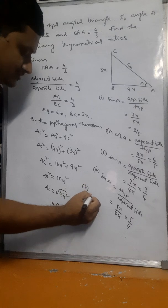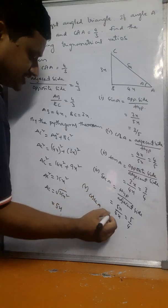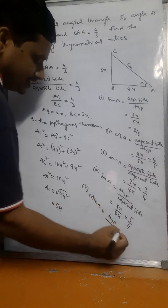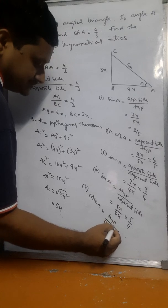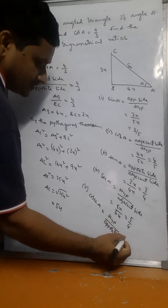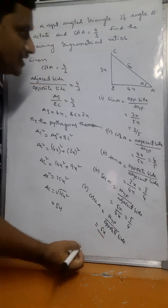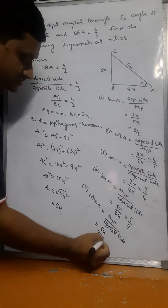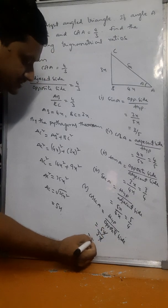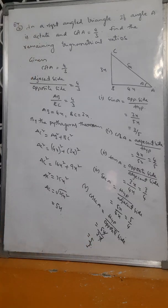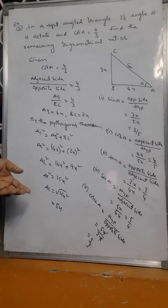Cosec A means hypotenuse by opposite side, which is 5x by 3x, giving 5 by 3. So summarizing: sin A equals 3 by 5, cos A equals 4 by 5, tan A equals 3 by 4, sec A equals 5 by 4, cosec A equals 5 by 3.